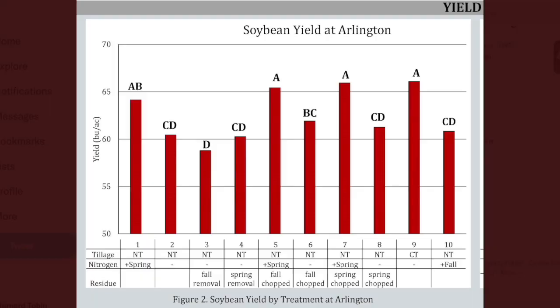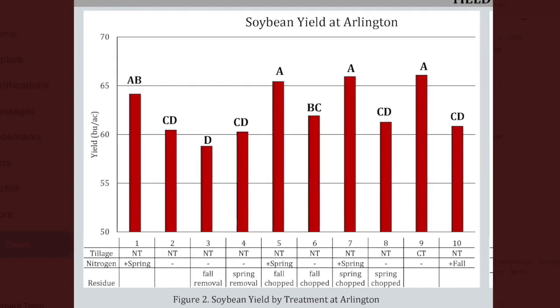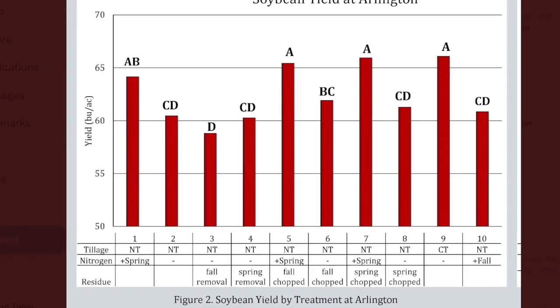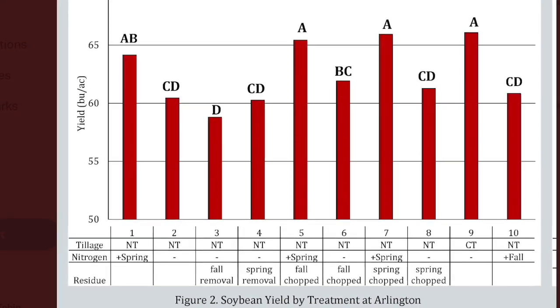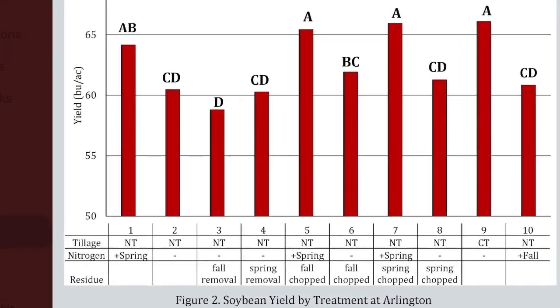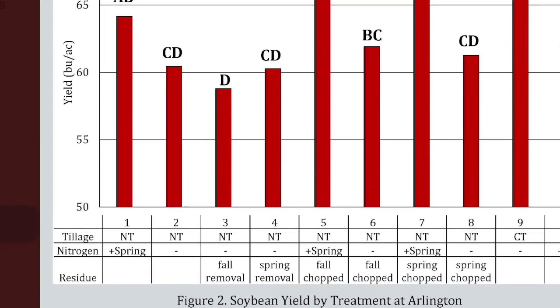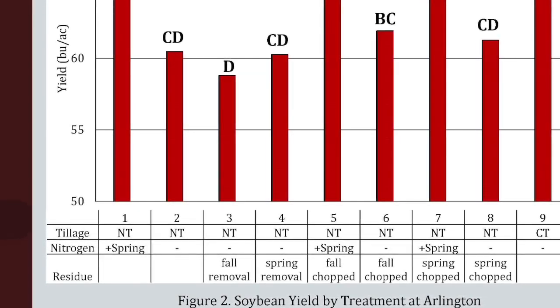Now the data indicates that removing residue in spring and fall actually reduces yield. Are you surprised by that? What's happening there? Yeah, it's a good question. As a scientist, we have to say what the data supports and what we don't know. And I just want to suggest that this is only one year of data, still digging into this. I don't want to put too much weight on one-year data, but I think there are some interesting things that farmers can at least think about.